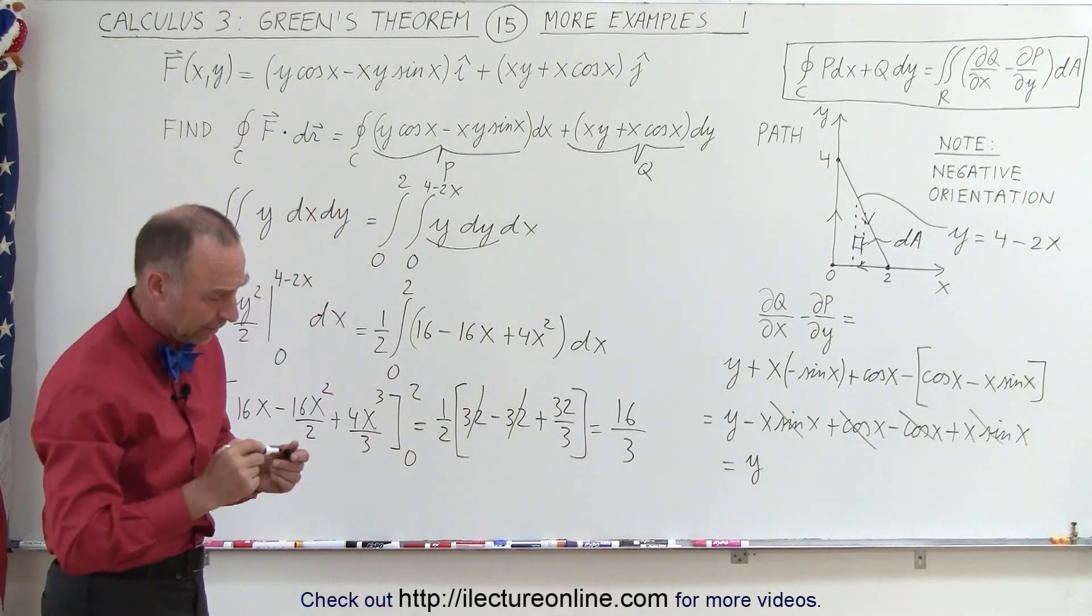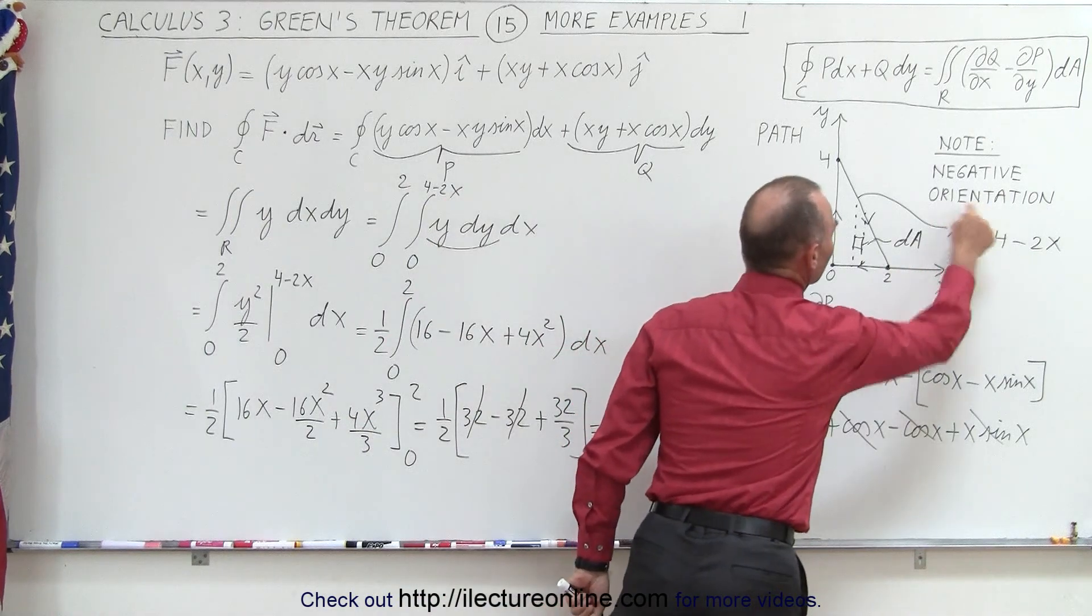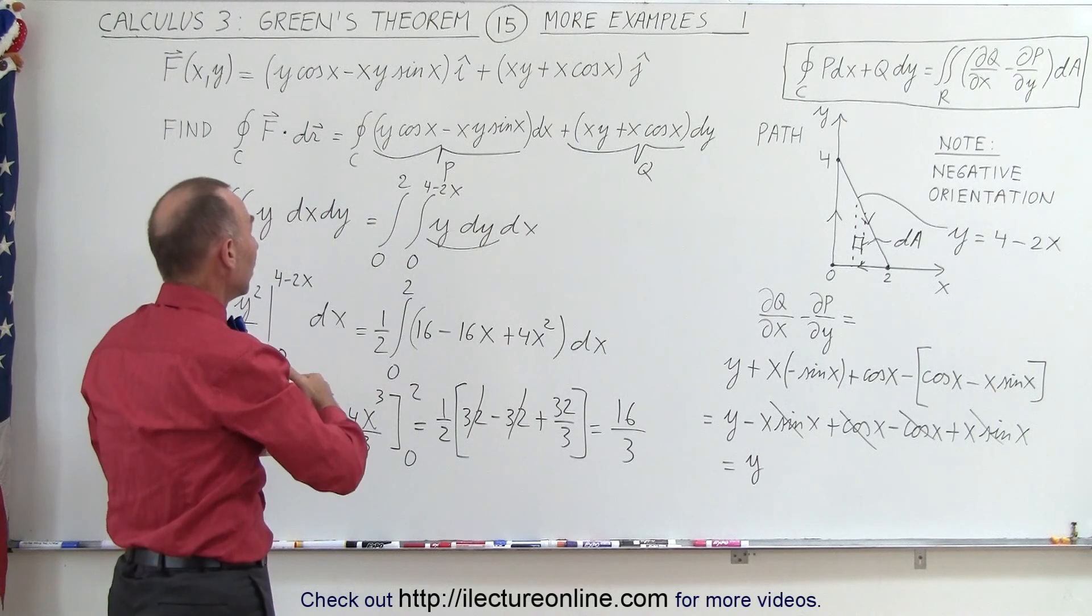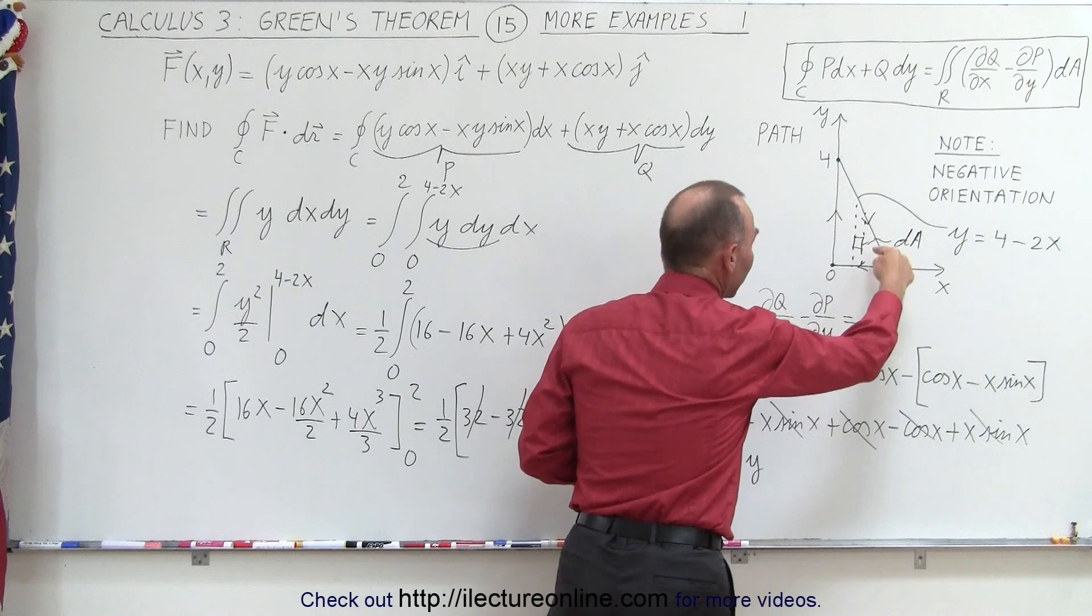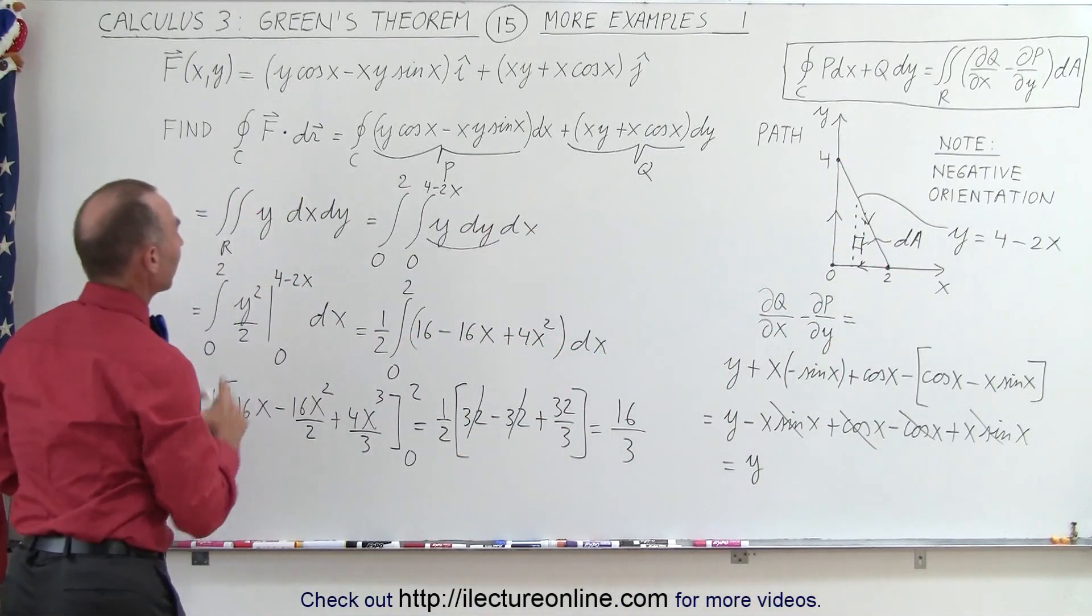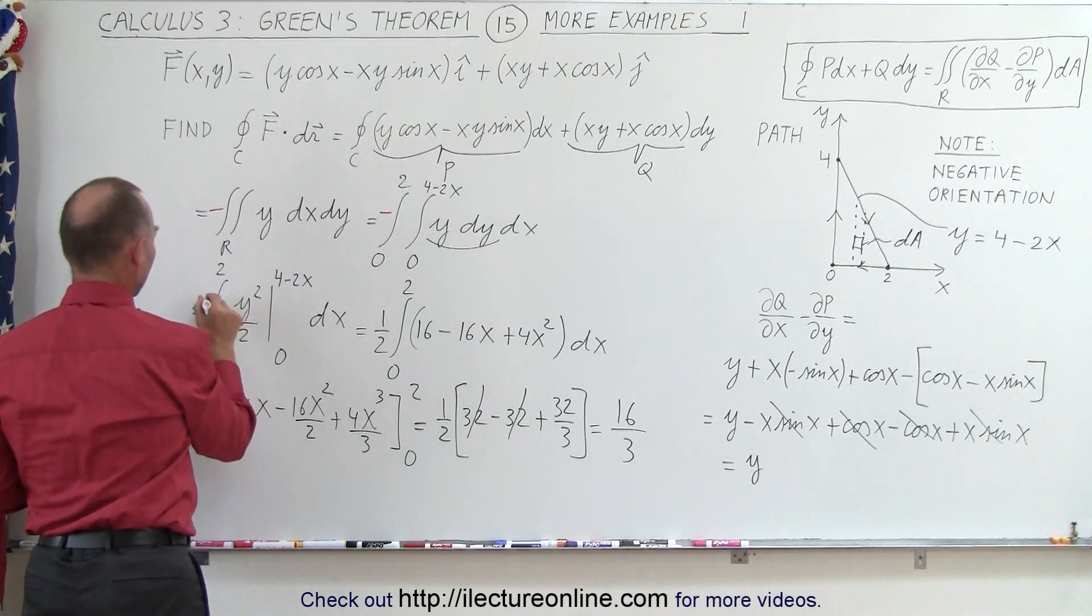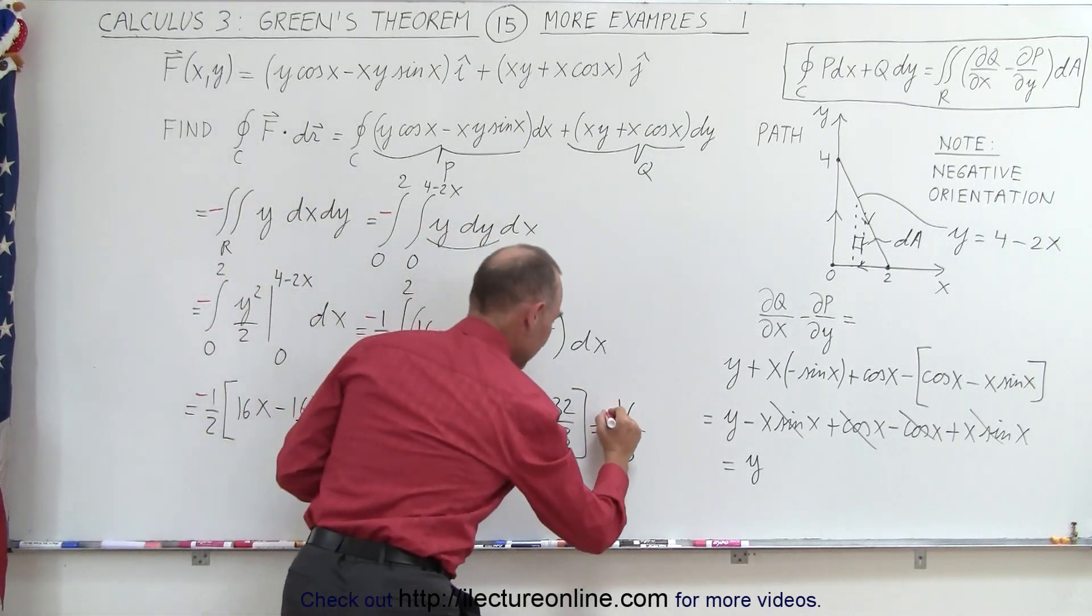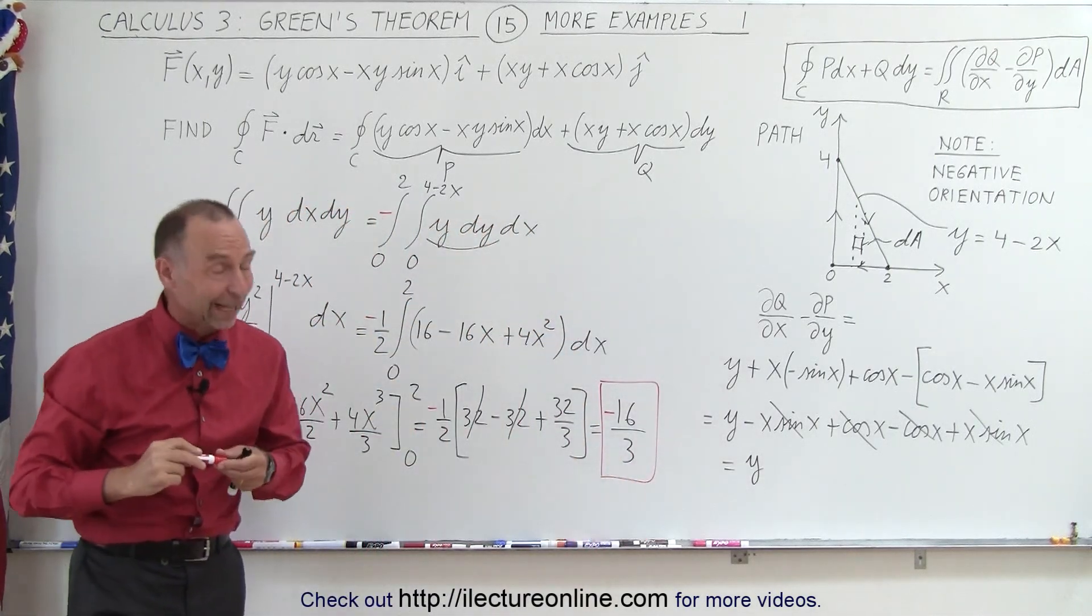Now you say, okay, there's my answer. But not so fast. Because again, there was a negative orientation. Which means right from the start, we knew we're going to have to add a negative sign to take into account that we're going around the path in a clockwise direction rather than a counterclockwise direction. So all along we realized that this was going to be equal to the negative of that. So we can just say the negative of that, the negative of that, the negative of that, negative, negative, and negative. And so this, in essence, is the correct answer for that particular problem.